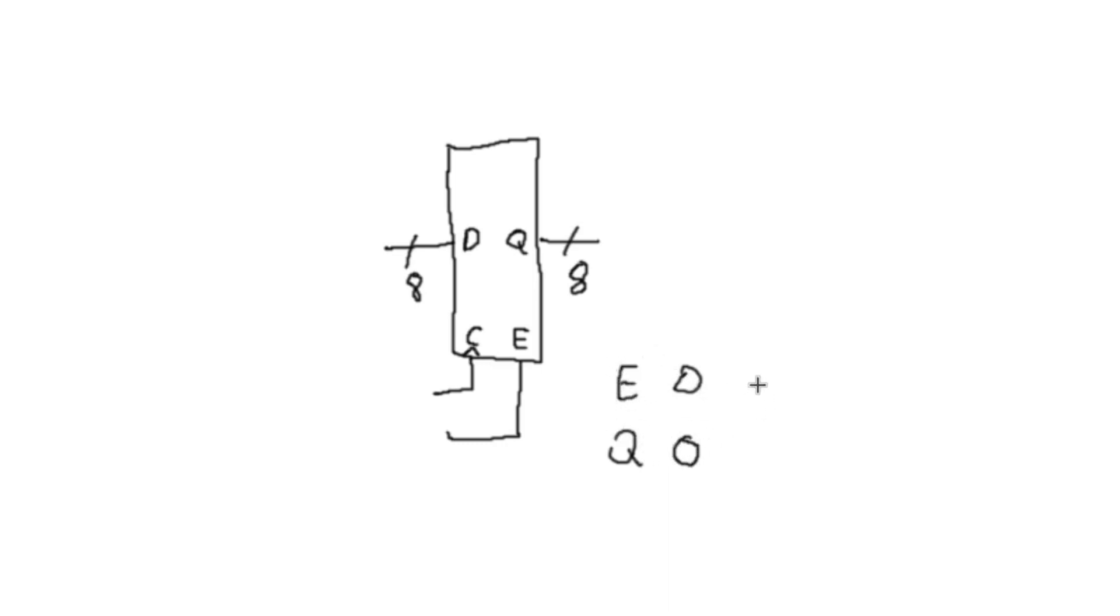However, if E is a one, then Q is whatever is in the data register and we'll denote data register as DR. That way we're not confusing with the D input. So whatever is stored in the register is presented on the output Q. If E is a one, otherwise it is a zero or in some cases high impedance.